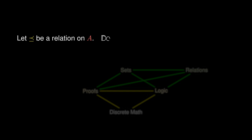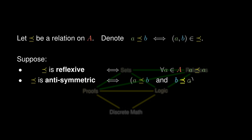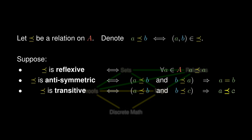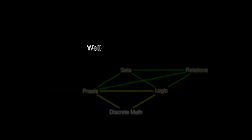Suppose now we have a different relation, and we denote A less than or equals B whenever the ordered pair AB belongs to less-than-or-equals. Suppose this relation is reflexive, anti-symmetric — meaning if two elements are related to each other, they are one and the same — and transitive. We call less-than-or-equals a partial order on the set A, which is a generalization of the less-than-or-equals in our usual understanding of real numbers, giving us the well-ordering principle.